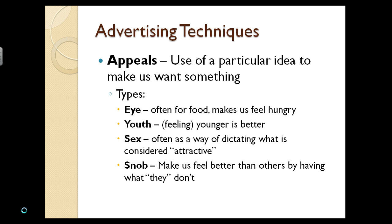Next, appeals as advertising techniques — specific ideas used to make us want something. Eye appeal is used almost exclusively for food and is designed to make us feel hungry. Watch out for tricks: on cereal boxes, it's often Elmer's glue instead of milk; steaming food may use a steam iron hidden under the table; and there are painted fruits and vegetables that aren't even actually food. The idea is to make us want it because it looks so good, even if it doesn't match what you get when you buy the product.